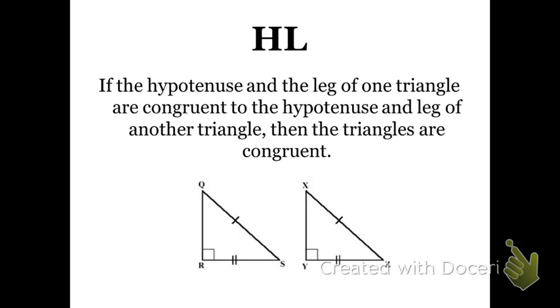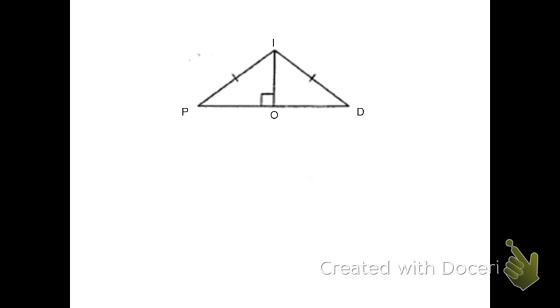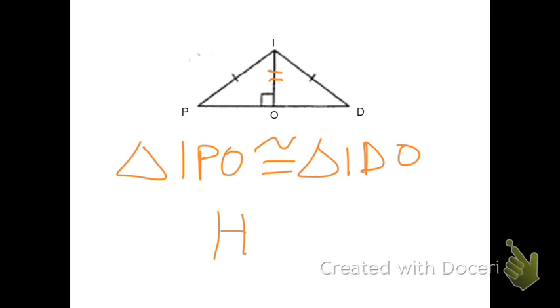There's one more that does work: Hypotenuse-Leg. It's a special conjecture just for right triangles. If the hypotenuse and a leg of one right triangle are congruent to the hypotenuse and leg of another right triangle, then the triangles are congruent. Looking at triangles IPO and IDO, both their hypotenuses are congruent and they share leg IO, so triangle IPO is congruent to triangle IDO by Hypotenuse-Leg.